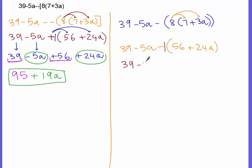So, 39. Negative 1 times 56 is negative 56. Negative 1 times 24 is negative 24. And we have our a.